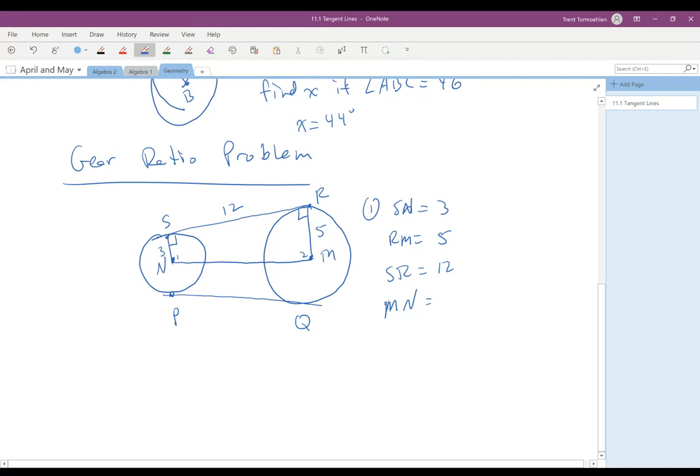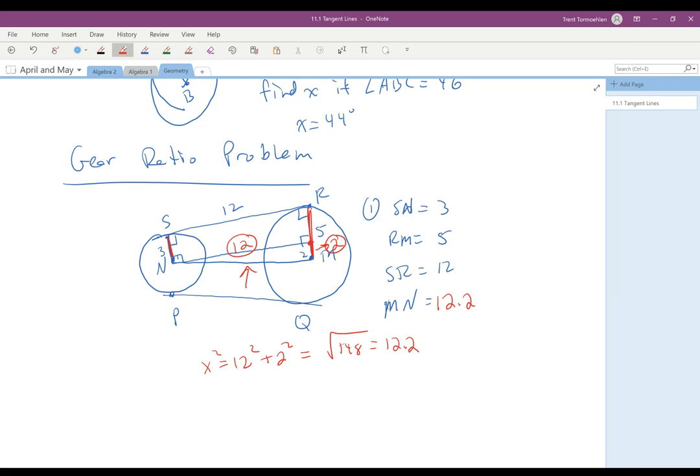Well, what you do is you draw in a rectangle. If I draw in this rectangle right here, the reason why that's significant is because now I know that this length is 12 to this point right here. And then because this length is 3 and this length is 5, we're going to get that this length is 2. So we get a side length of 12, a side length is 2, and so we can use the Pythagorean theorem to find out what that length is. And so it's going to be x squared equals 12 squared plus 2 squared, which gives you the square root of 148, which is just a little bit bigger than 12. And that is 12.2. And so our value of MN, rounded to the nearest tenth, is just going to be 12.2. And you're going to use some version of that to solve the gear ratio problems.